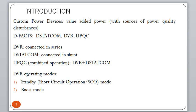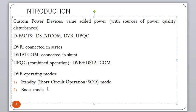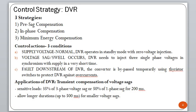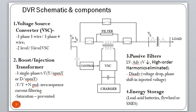DVR can operate in two modes: standby mode or boost mode. Standby mode is also called short circuit operation (SCO) mode. In standby mode, there is no injection of power and no compensation is provided to the system; if there is a battery, it can charge the battery. In boost mode, the DVR injects energy into the system in the form of voltage.